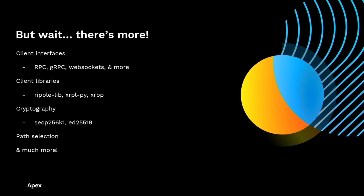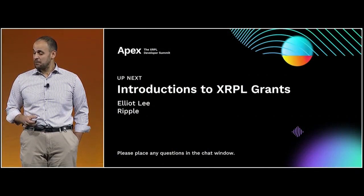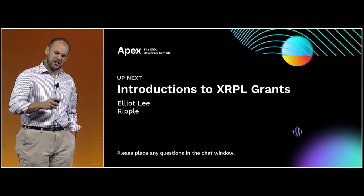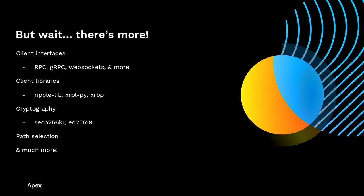We'll wrap up with some additional topics. The RPC interfaces — any language that has a WebSocket library can communicate with the XRP ledger. ripple-lib, which has been renamed to xrpl.js, is the JavaScript and TypeScript interface. xrpl.py is the Python interface. XRBP, as I just mentioned, is the Ruby interface. Two different cryptography formats are supported: SECP256K1, which is the same format Bitcoin supports, as well as ED25519, which is more resilient to attacks from quantum computers. There's a lot more that goes into path selection — I encourage everyone to explore the code on your own. Thank you all for having me. I'll take any questions either right now or via email.